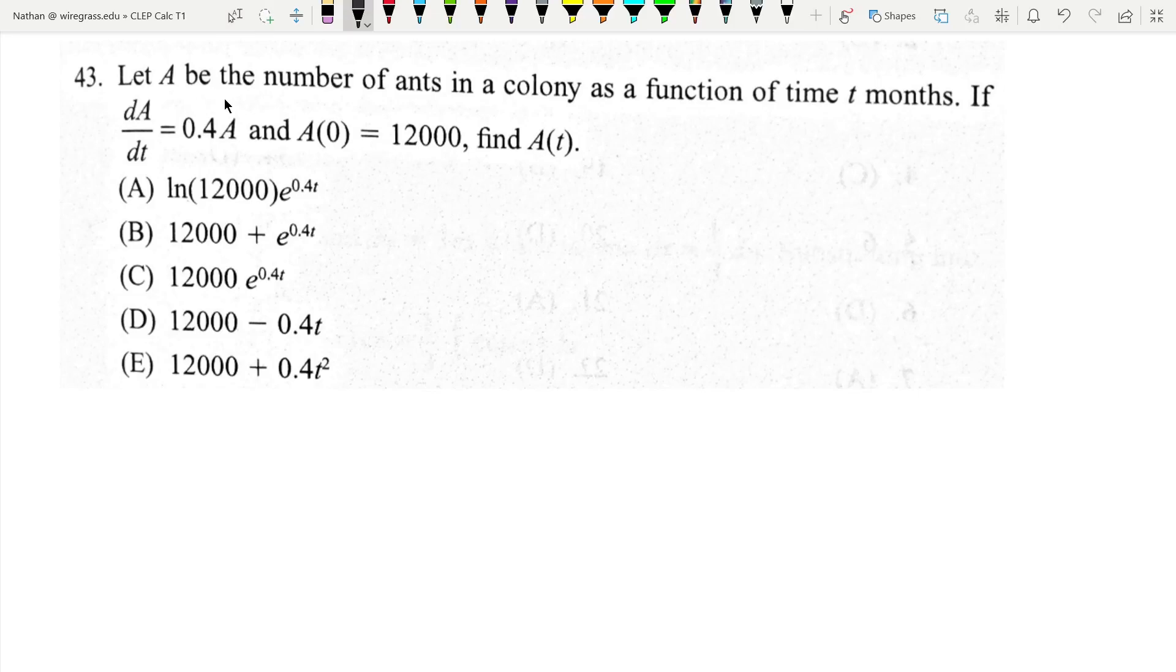Okay, we have A is the number of ants in a colony, and we have this differential equation here. The derivative of A equals a constant times A. We also have this initial condition, A of zero is 12,000.